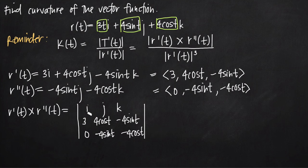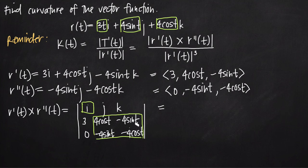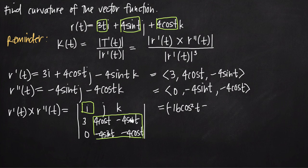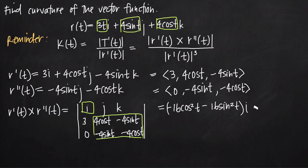Starting with the i component, we take everything outside the row and column containing i. Multiplying upper-left by lower-right: 4cos(t) times negative 4cos(t) gives negative 16cos²(t). Then we subtract lower-left times upper-right: negative 4sin(t) times negative 4sin(t) gives positive 16sin²(t). So we have negative 16cos²(t) minus 16sin²(t), all times i.